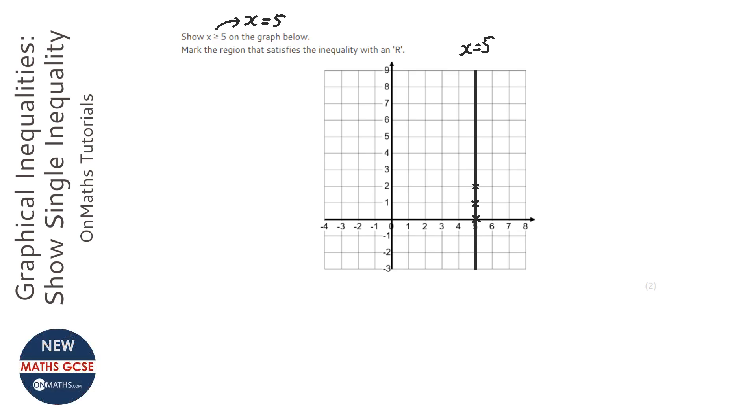Well, it says that x can be anything that's greater than or equal to 5. So x could be 5, 6, 7, 8 on this graph, because obviously it only goes up to 8. So anywhere this side of the line is absolutely fine. So I'm going to mark my R there.